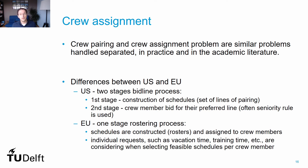There are also differences in the way crew assignment is run in American and European airlines. In the US, a bid line or preferential bidding process is followed. First, a set of lines of pairings are built by the airline. Then each crew member has a chance to bid on their preferred set of lines. The airline then uses normally a seniority rule to allocate these lines of pairings to each crew. In Europe, on the other hand, there is only one stage. The schedules are computed by the airline already completed, in which individual requests such as days off, requests to fly a specific route, and needs for training are considered when building the roster for each crew member.